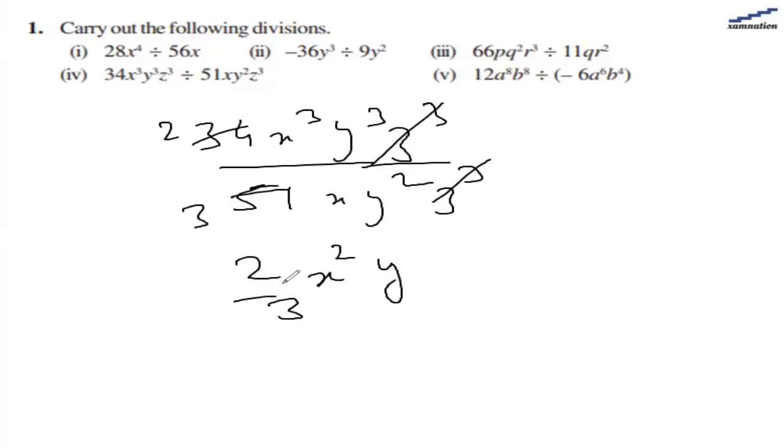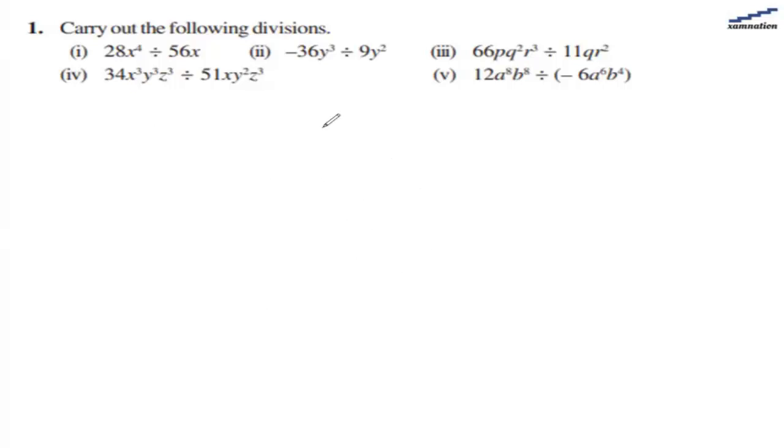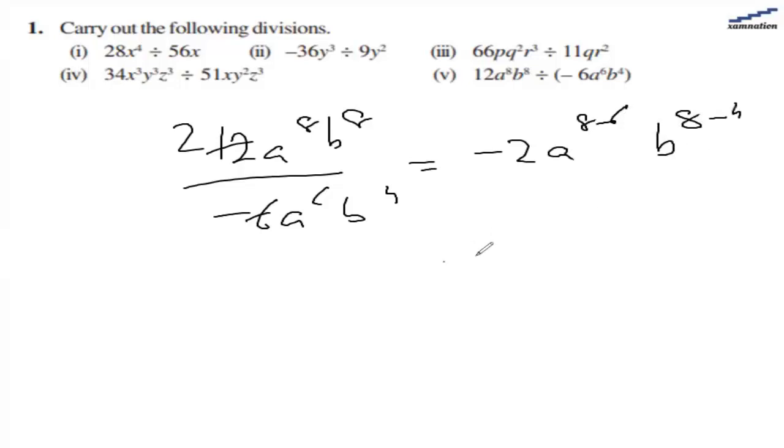For the fifth part we have 12a raised to 8 and b raised to 8 divided by minus 6a raised to 6 and b raised to 4. 12 and 6 gives us 2, so it is minus 2. For the exponents: a raised to 8 minus 6 equals 2, and b raised to 8 minus 4 equals 4. So we have minus 2a raised to 2 and b raised to 4 as the answer for the fifth part.